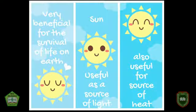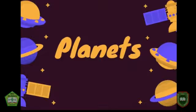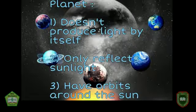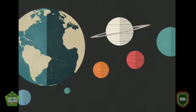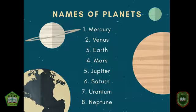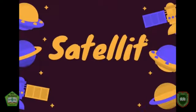The Sun is very beneficial for the survival of life on Earth. It is also useful as a source of light and source of heat that is useful for all living things. Besides stars, there are also planets. A planet is a sky object that doesn't produce light by itself but only reflects sunlight.